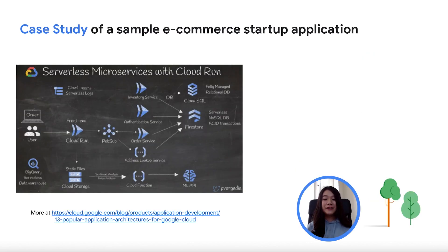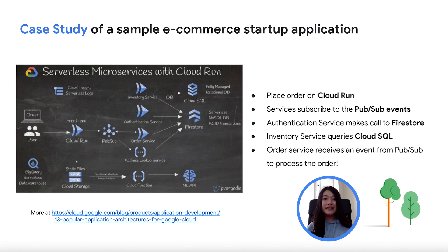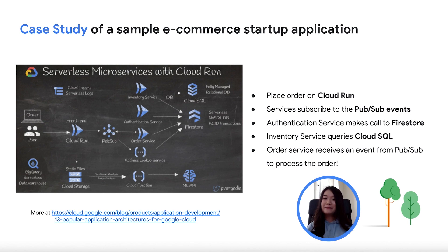Now let's take a look at a fictitious use case of a sample e-commerce application. When an order is first placed on the front end, which is deployed on Cloud Run, Cloud Run receives the request and sends it over to Pub/Sub, which is an asynchronous messaging service. The subsequent microservices, which are also deployed on Cloud Run, can then subscribe to these Pub/Sub events and make calls to the other parts of the architecture.